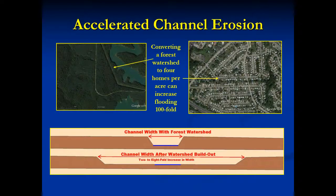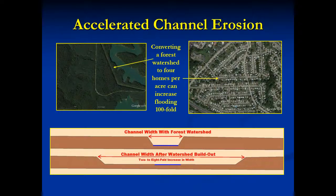Converting a forested watershed to one blanketed by homes can increase the frequency and severity of flooding by a hundred fold. Flood water volumes and velocities that once recurred every hundred years before development can come annually once home construction is completed. The tremendous increase in velocity and volume of floodwaters causes a dramatic increase in stream channel erosion. Part of the increase is due to replacing permeable forest soils with impervious surfaces like rooftops and asphalt, and part is due to replacing natural channels with very smooth street gutters and storm drains. These two mechanisms can cause a forest channel to erode to a width two to eight times greater following watershed development.